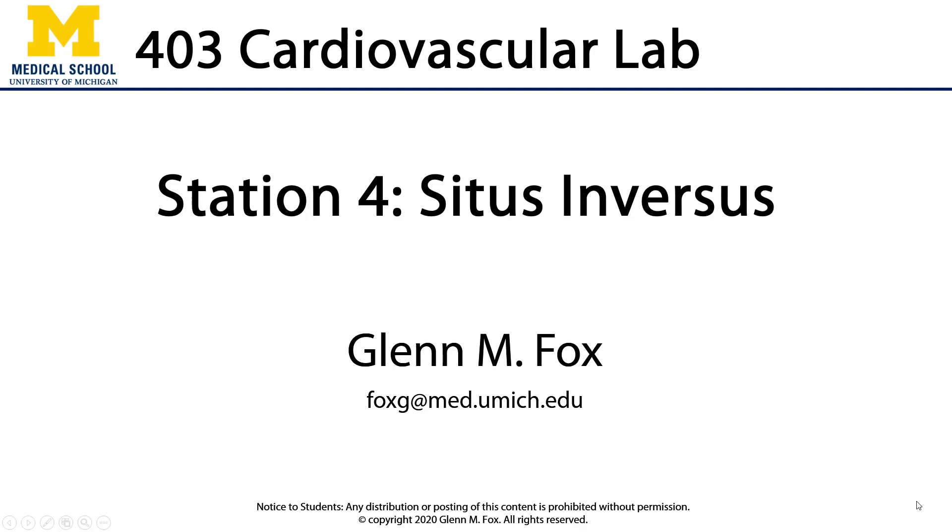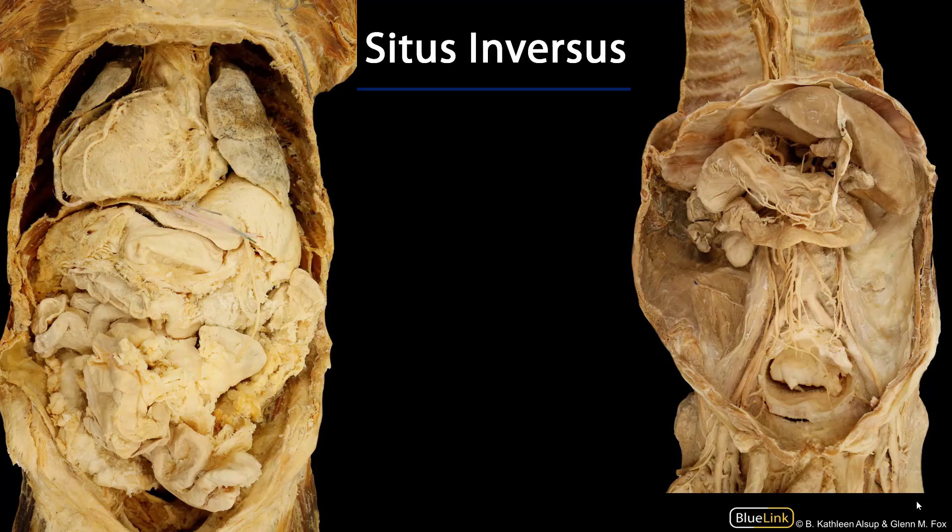Let's talk about situs inversus. Situs inversus is a congenital flipping on the horizontal axis of viscera. It may come in a variety where all of the viscera are flipped upon this horizontal axis, known as situs inversus totalis, or it may just include either the thoracic or the abdominal organs.